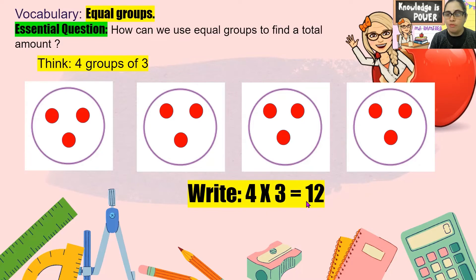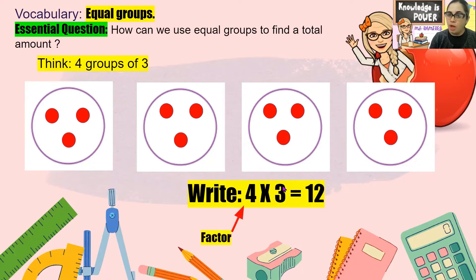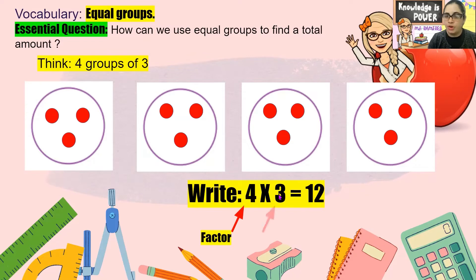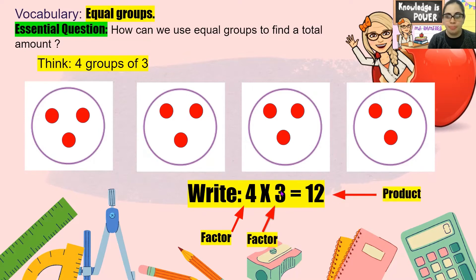Four groups with three in each equals 12 in all. The number four — the amount of groups — is a factor. The number three — the amount in each group — is another factor. And the number 12 — the total amount in all — is the product.